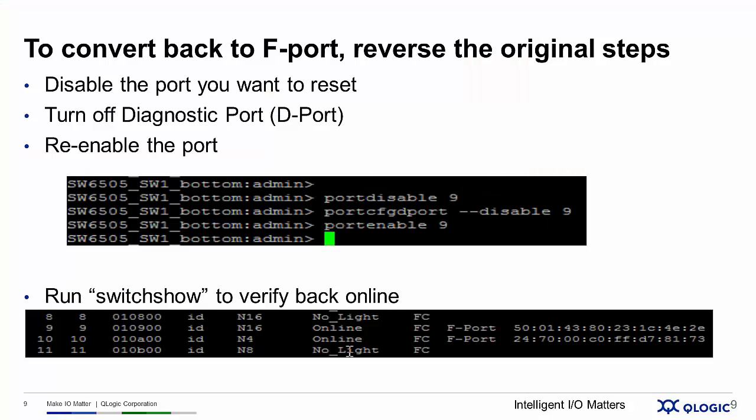All of that can be scripted, and you can run it across multiple different ports. Once you have completed, remember you want to convert back to a standard port. You reverse the steps: you're going to need to disable the port, turn off the diagnostics d-port, and then re-enable the port. Then you'll be back online connected to your SAN.